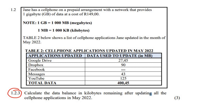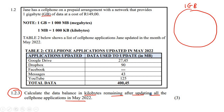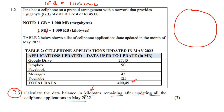Now this question says: calculate the data balance in kilobytes remaining after updating all of the applications. Remember that Jane receives one gigabyte — that's how much she receives at the beginning. Let's change everything to kilobytes because they've asked us to work in kilobytes. To change a gigabyte to a kilobyte: one gigabyte equals 1,000 megabytes. Now to go from megabyte to kilobyte, you multiply by a thousand — so one megabyte becomes 1,000 kilobytes. So 1,000 megabytes multiplied by 1,000 becomes one million kilobytes.